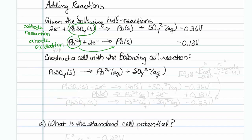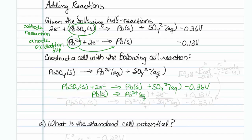Rewriting this, we have lead sulfate solid plus two electrons going to lead solid plus sulfate two-minus, and this has a minus 0.36 volts. The other one I am going to flip, so it becomes lead solid going to lead two-plus plus two electrons. Technically I flipped it, so there are two ways you can do this: cathode minus anode, or following enthalpy rules, I can make this plus 0.13 volts so that when I add reactions, I'm actually adding voltages. So this gives minus 0.23 volts.